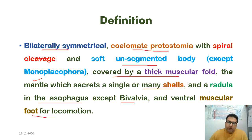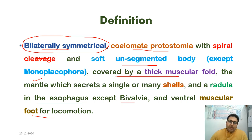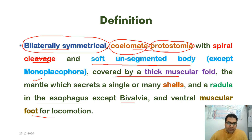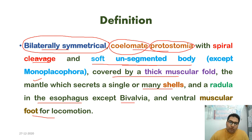Mollusks are bilaterally symmetrical — their body can be divided into right and left halves. They are coelomates, having a true body cavity. They are protostomia, meaning the mouth develops first, with spiral cleavage. They have a soft unsegmented body, meaning their body is not divided into exact replicas like segments.